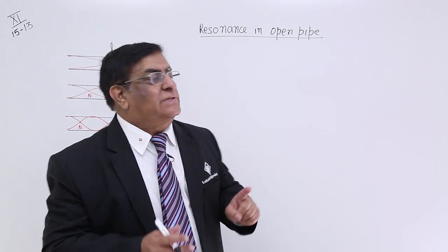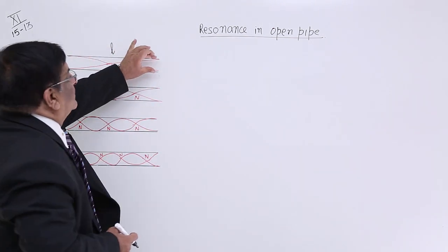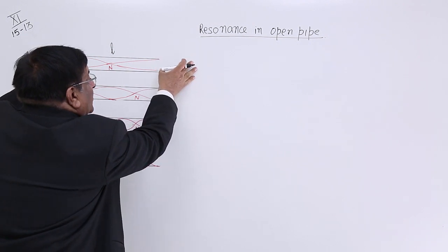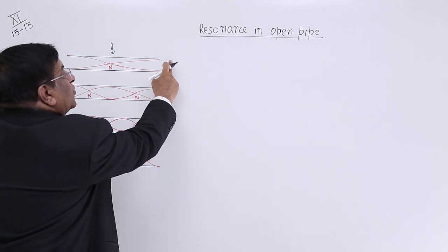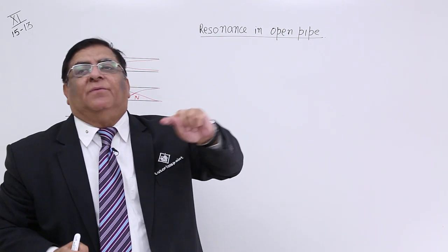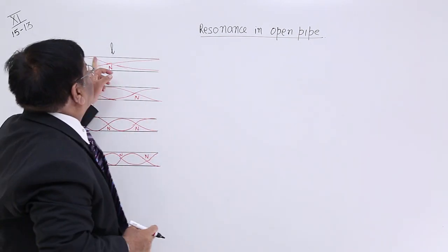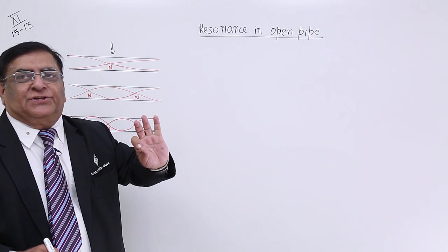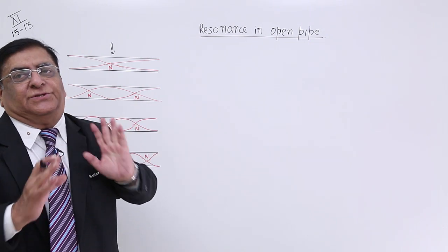Now because this is a closed system and this is an open system, so there is a boundary here. Then close system to open system and whenever there is a boundary there will be some reflection. So there are certain reflection from this boundary, from this boundary and because of these reflection, there is superposition.